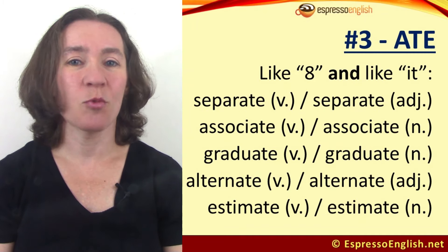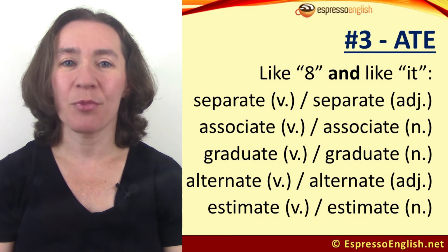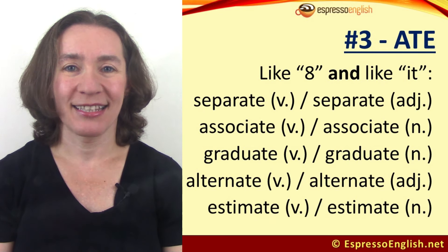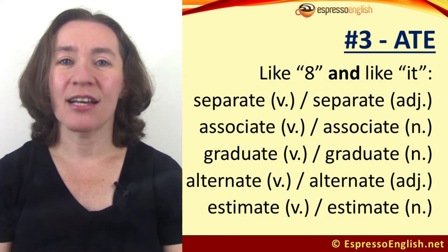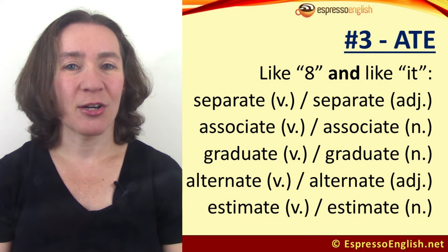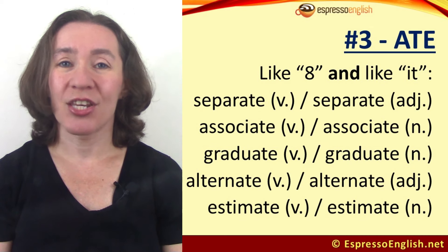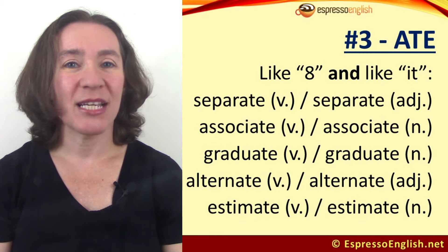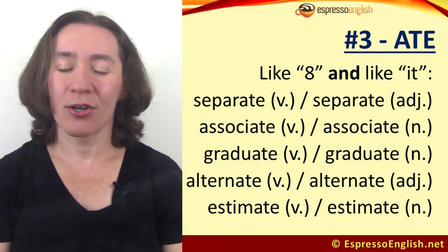In some words it can be both. The verb is 'separate' and the adjective is 'separate.' The verb is 'associate' and the noun is 'associate.' The verb is 'graduate' and the noun is 'graduate.' The verb is 'alternate' and the adjective is 'alternate.'